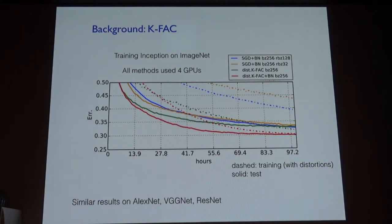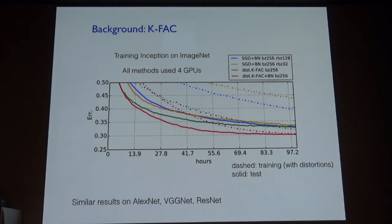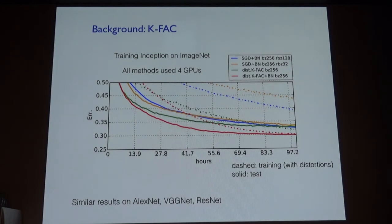Question on using the square root of the Fisher (as in Adam) vs. the Fisher: You can think of raising the Fisher matrix to the half power as a kind of damping — one way to prevent the algorithm from taking very long steps in low-curvature directions. Traditionally in KFAC we add a multiple of the identity to the Fisher matrix to prevent big steps in low-curvature directions. Raising the Fisher to the one-half power is another way to get the same effect. We didn't find it to be advantageous to raise it to the one-half power in our experiments, but it doesn't affect the fixed points — it's purely an optimization issue.